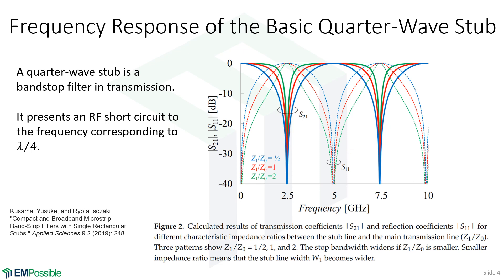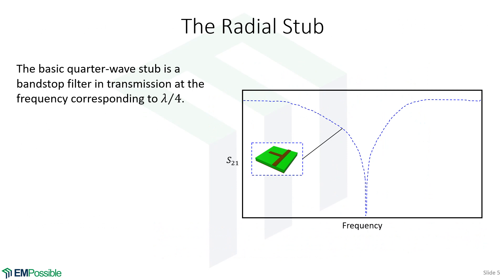So that is very typical of a quarter wave stub. Now, the question, why the radial stub? So we look at the response of the basic radial stub, and it's relatively narrow band. So we might ask ourselves, how do we make this more broad band?